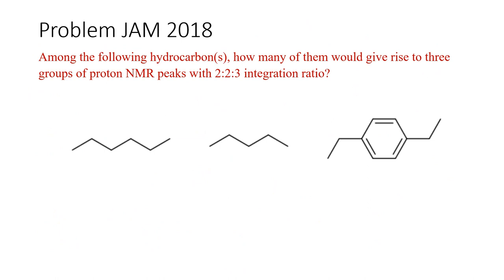Next question: among the following hydrocarbons, how many could give rise to 3 groups of proton NMR peaks with a 2:2:3 integration ratio? The integral values ratio is 2:2:3, which directly corresponds to 2 protons, 2 protons, and 3 protons.